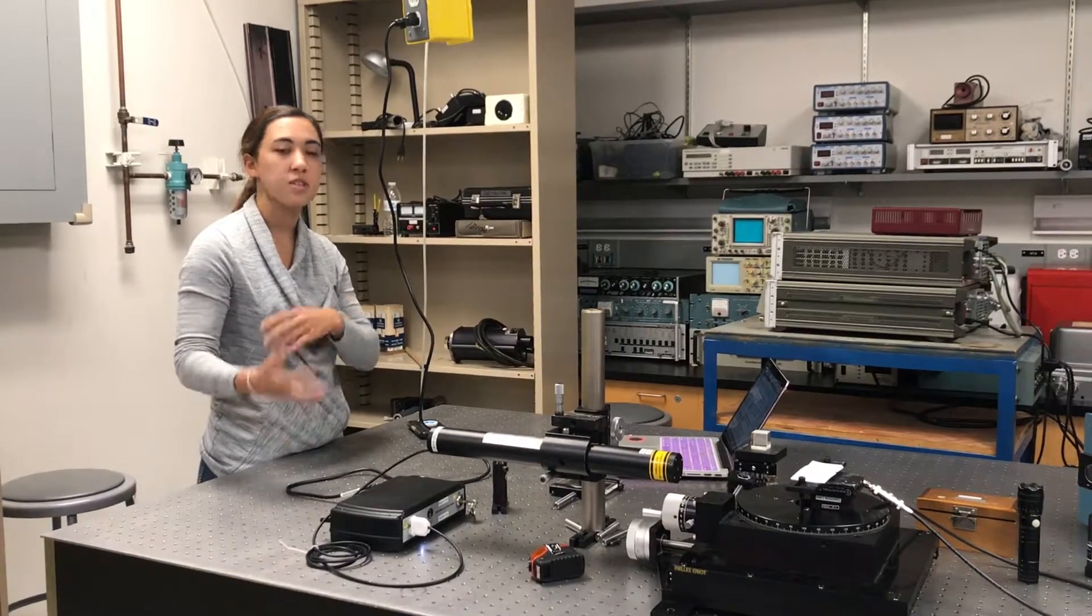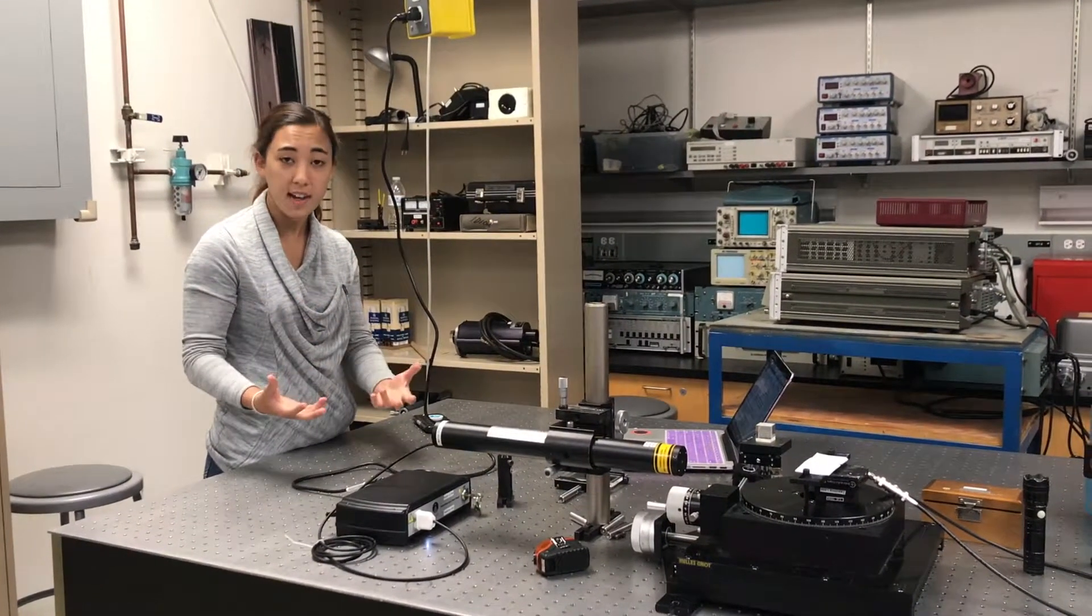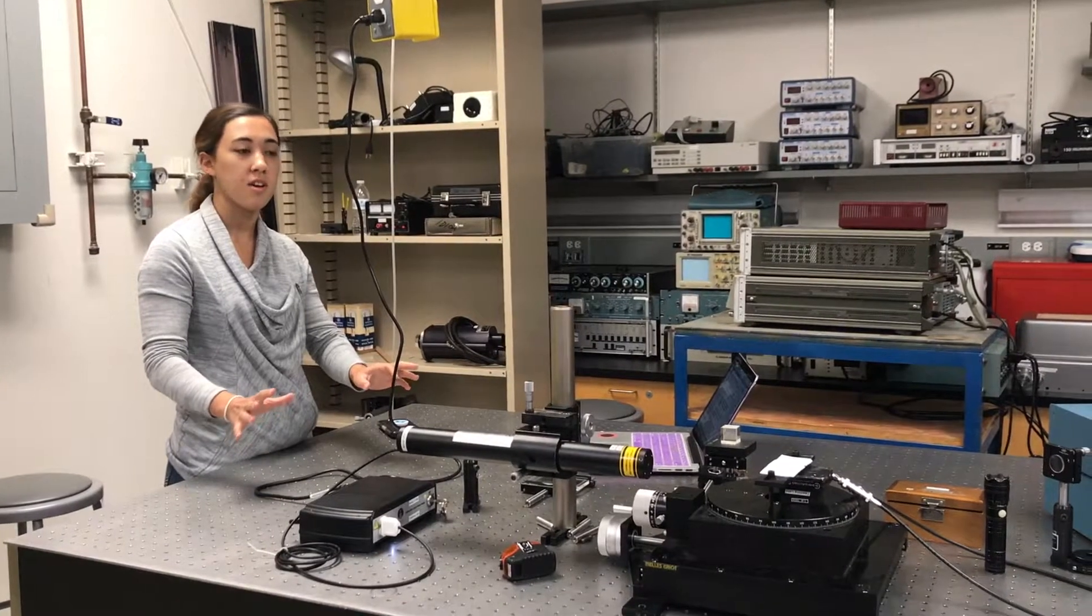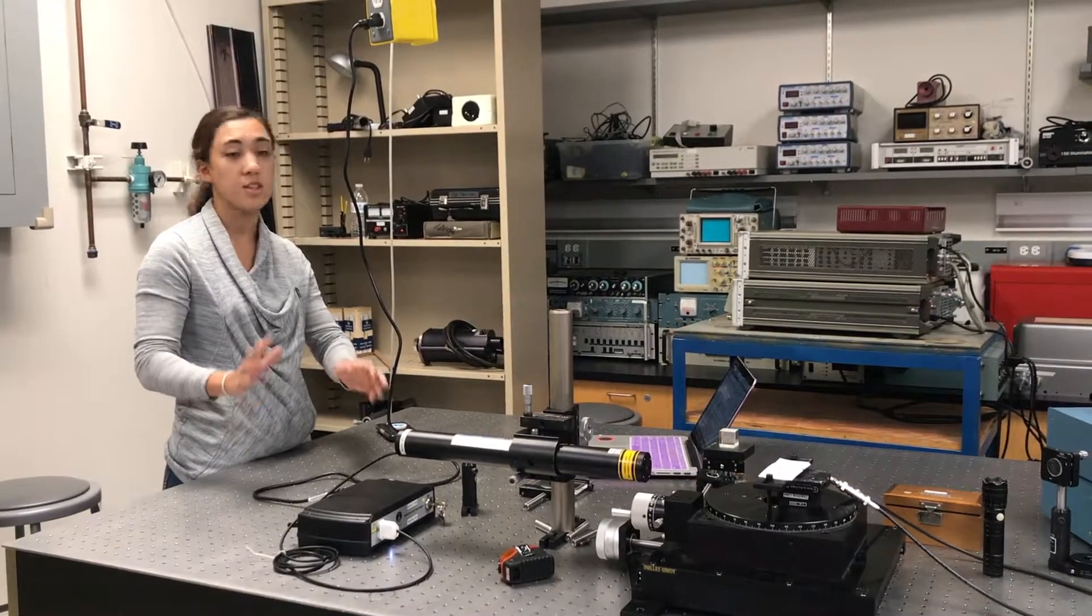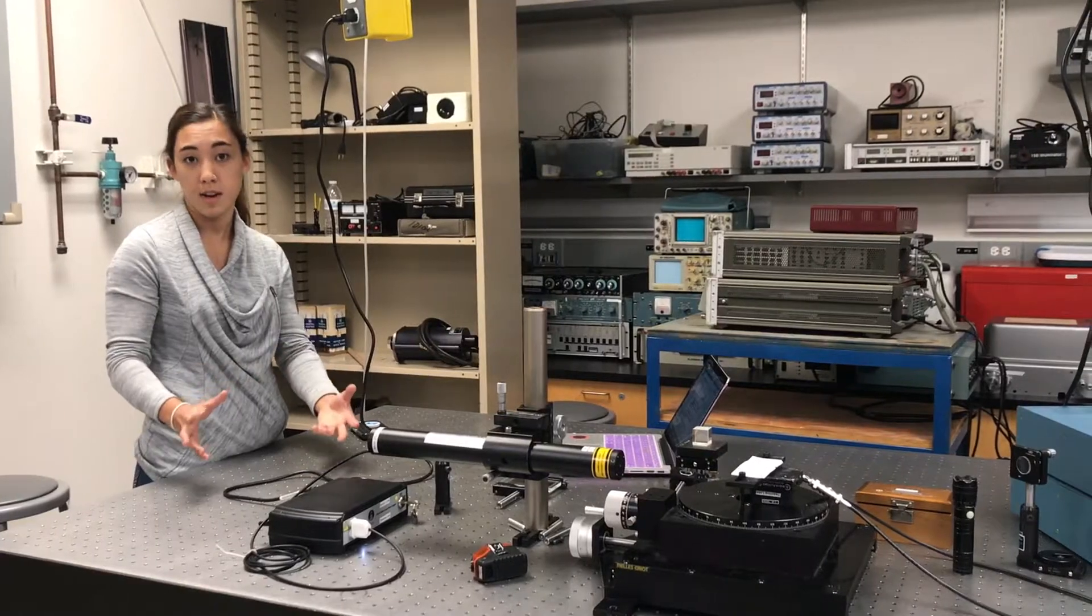We know that the more it vibrates, the more our beam is going to diffract. Along with this information, if we know the Bragg angle, we are able to determine what kind of composition the crystal is made out of.